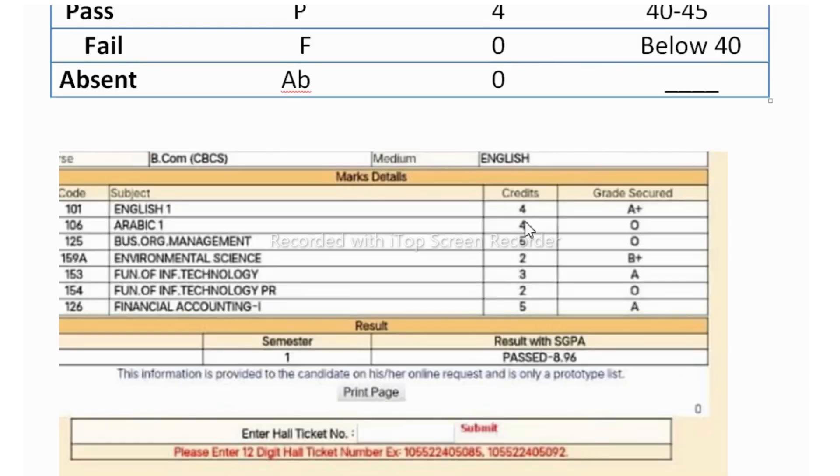Suppose for example, you can see here English is there. English four credit is given by the university only. For Arabic, there is four credit, and for organization management, five credit is there. Financial accounting, five credit is there.